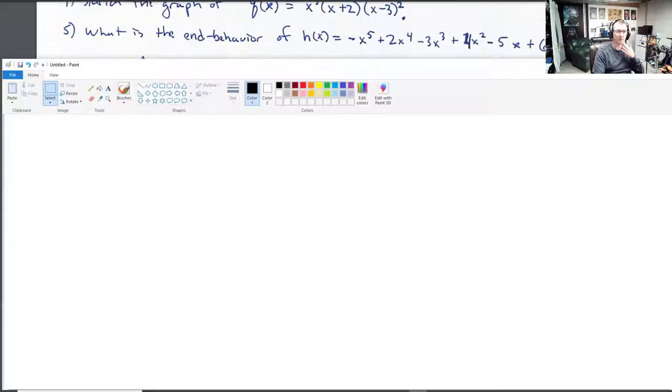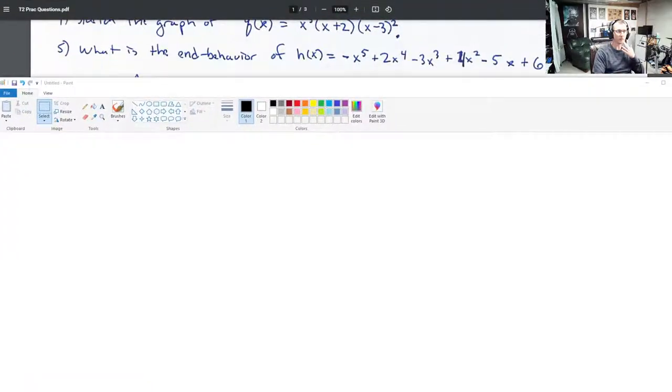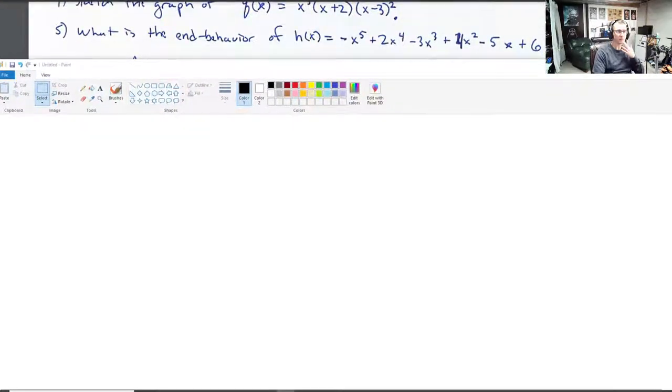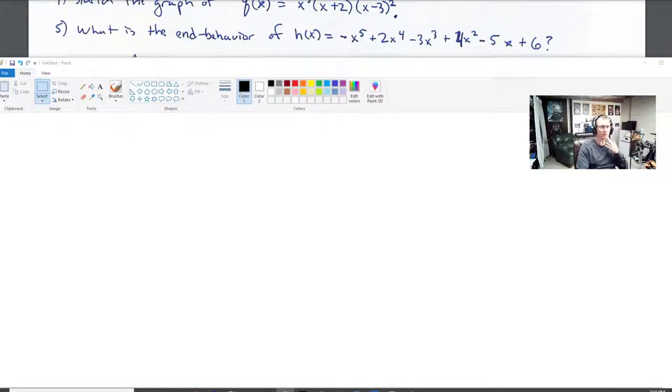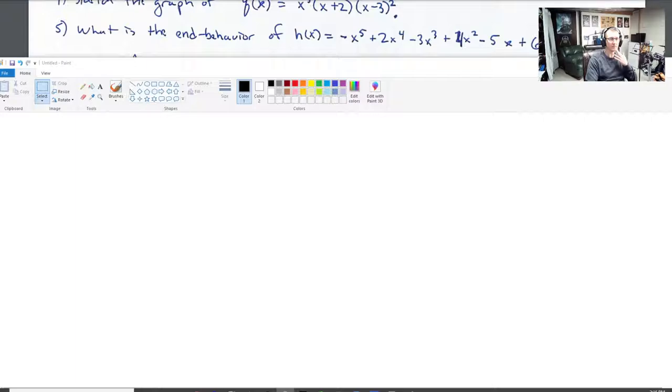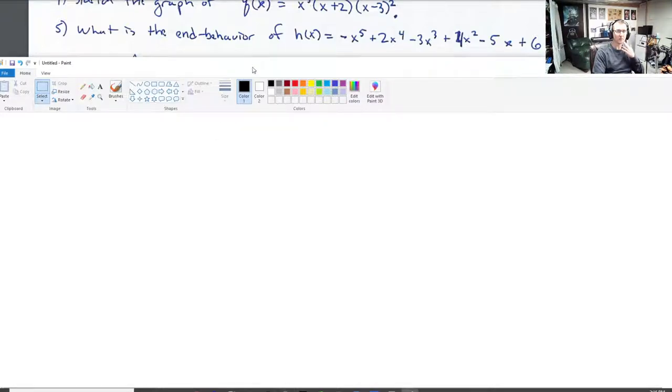Here we go. You'll be convinced even more that there's nothing else behind that. It's just a six. So what is the end behavior? Well, we look at this leading term, which has the highest degree. It's x to the fifth with a negative sign. This is the only thing that determines end behavior.